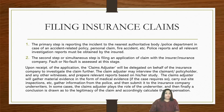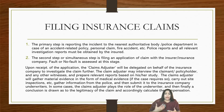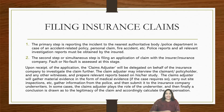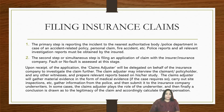What is the procedure for filing an insurance claim? The primary step is reporting the incident — for example, a fire is reported to the nearest police station, the police come and assess the matter, investigate, and give you a report. This document needs to be collected in order to file a claim. The primary step is reporting the incident to the nearest authorities — police department in case of an accident-related policy, personal claim, fire accident, etc. — and all relevant investigation reports must be obtained. The next step is filing an application or claim with the insurance company, where fault or no-fault is assessed. Upon receipt of the application, a claims adjuster will be delegated by the insurance company to investigate the claim further.